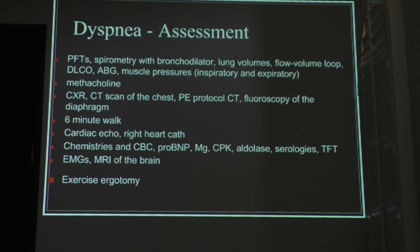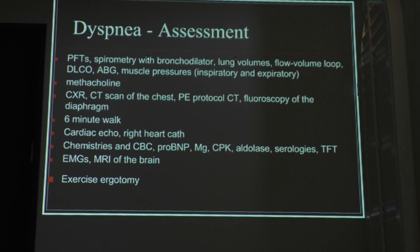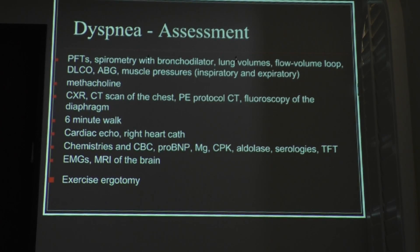We have many different ways of assessing these patients: PFTs, spirometry with bronchodilator — we're always assessing response, and anything greater than 12% response is indicative of some sort of reversible reactive airway disease. We look at lung volumes and flow volume loop graphs. You're going to get a question on your boards regarding these graphs — make sure you're familiar with the normal and pathological patterns. Also the DLCO and ABGs.